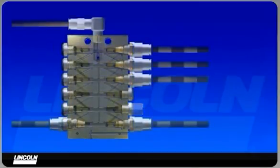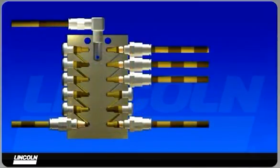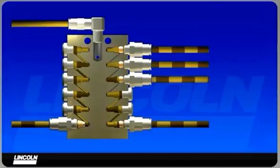Outputs from adjacent outlets are combined to increase the output to the lubrication points that require more lubricant, such as bucket pins and H-links.